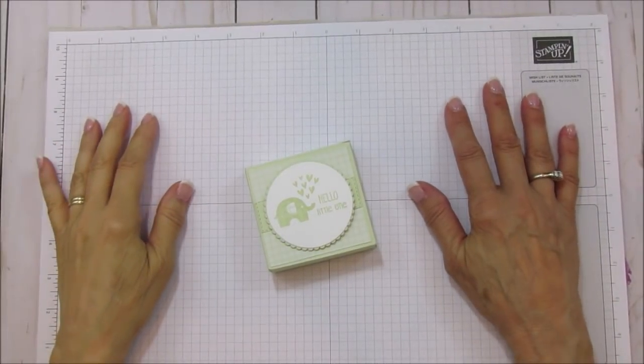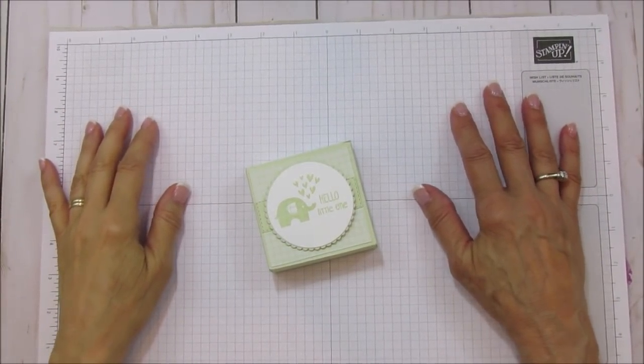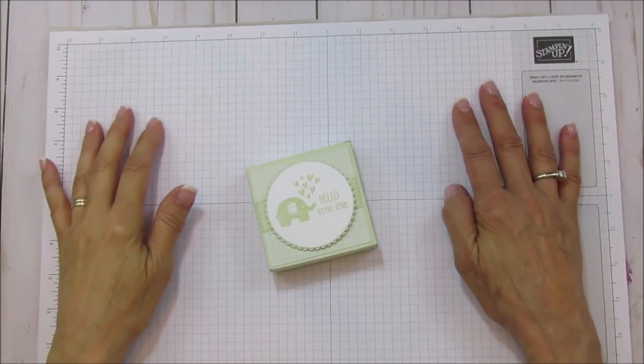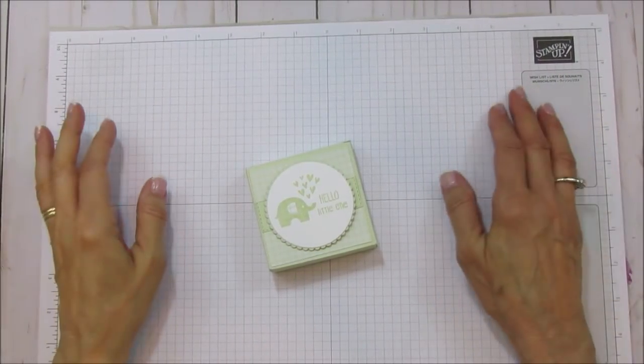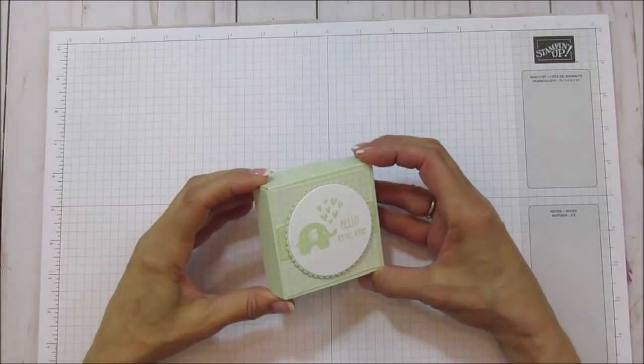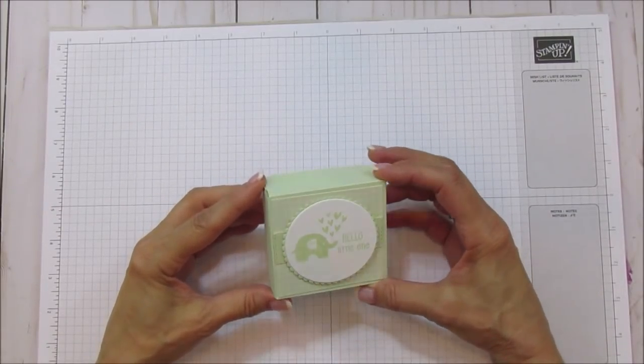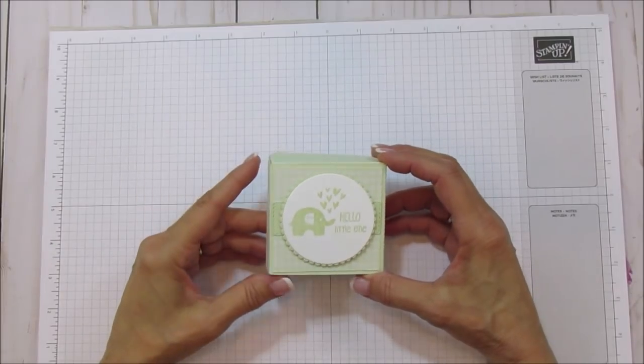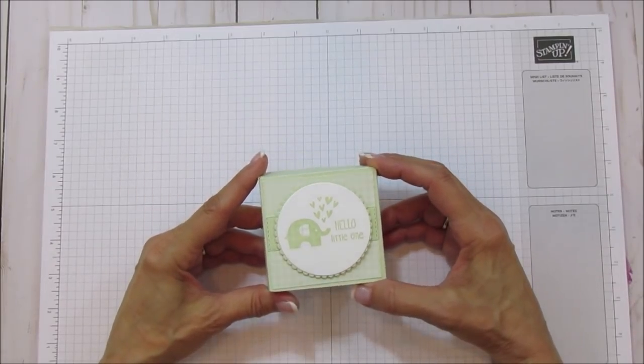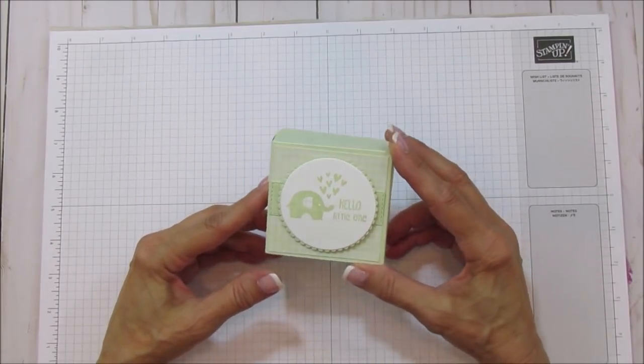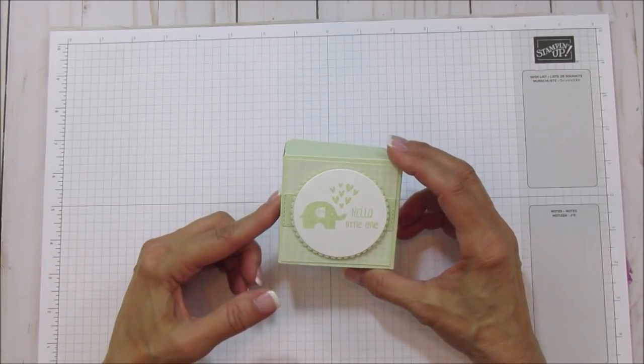Hello everyone, this is Angie at Stampin with Amore. Today I'm sharing a baby favor box. It could be for a baby shower or just a baby gift. It's really cute. You can fit little candies in here, Hershey's Kisses, Ghirardelli, Jordan almonds, whatever you choose.